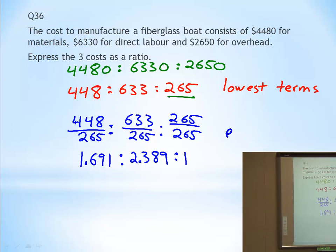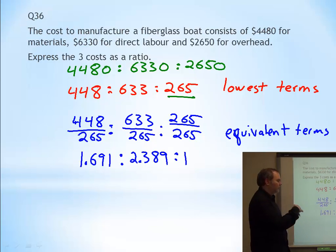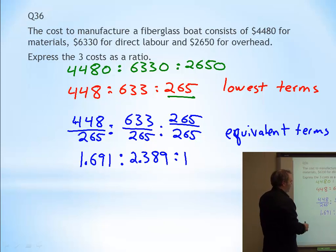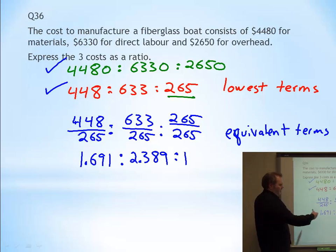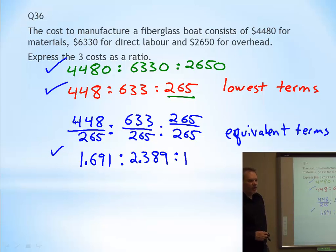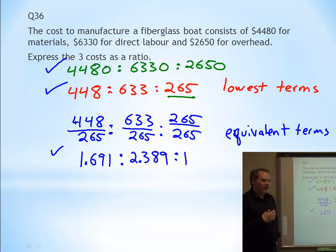So this is the equivalent terms. Which one is right? Well, since we did it, look at what we're asking for. It says express the three costs as a ratio. Are these three costs as a ratio? Yes. Are these three as a ratio? Yes. A little easier to understand. Also correct. Is this a ratio? Yes, it is. Also correct. Which one's the right one? In this case, they're all right. If we were really specific about lowest terms or equivalent terms, we'd choose one or the other. In this case, it's all good.